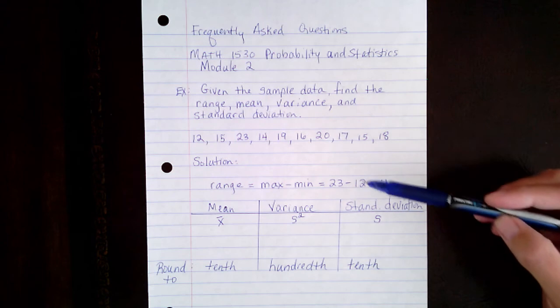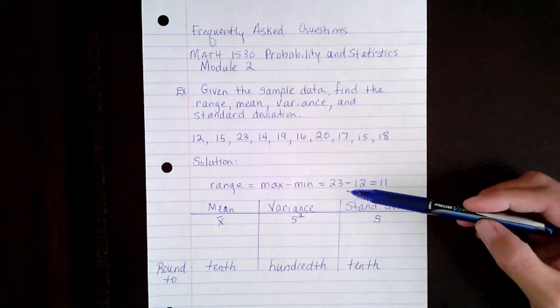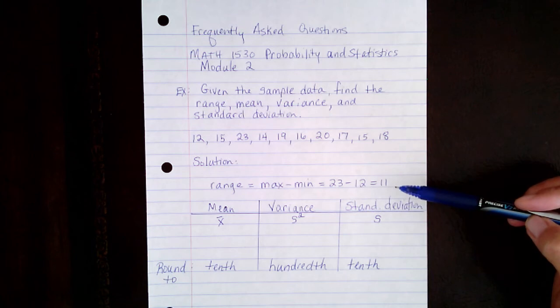Now to find the range, it's simply the maximum minus the minimum. So here 23 is the maximum, 12 is the minimum, so that's just 11.